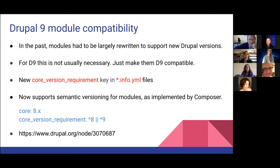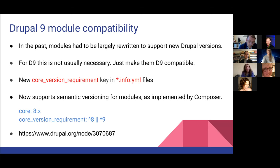The core_version_requirement also now supports semantic versioning for modules, as implemented by the Composer project. There are two lines of code that need to be inserted into the module's info.yaml file. The first line, 'core: 8', already exists but may not be required for modules only intended to work from Drupal 8.8 onwards. Importantly, semantic versioning allows modules to support multiple versions of Drupal, so many modules can now be made compatible with both Drupal 8 and Drupal 9.